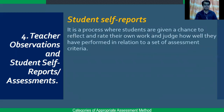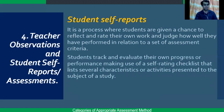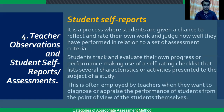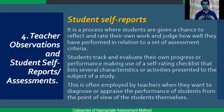Student self-reports is a process where students are given a chance to reflect and rate their own work and judge how well they have performed in relation to a set of assessment criteria. Students track and evaluate their own progress using a self-rating checklist. This is often employed by teachers when they want to diagnose or appraise the performance of students from the students' own point of view. Examples include diary, journals, reflection papers, and reaction papers — essentially any form of self-disclosure.